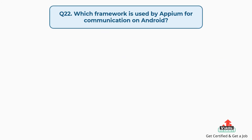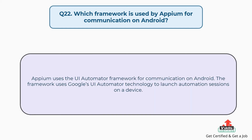Question number 22: Which framework is used by Appium for communication on Android? Appium uses the UI Automator Framework for communication on Android. The framework uses Google's UI Automator technology to launch automation sessions on a device.